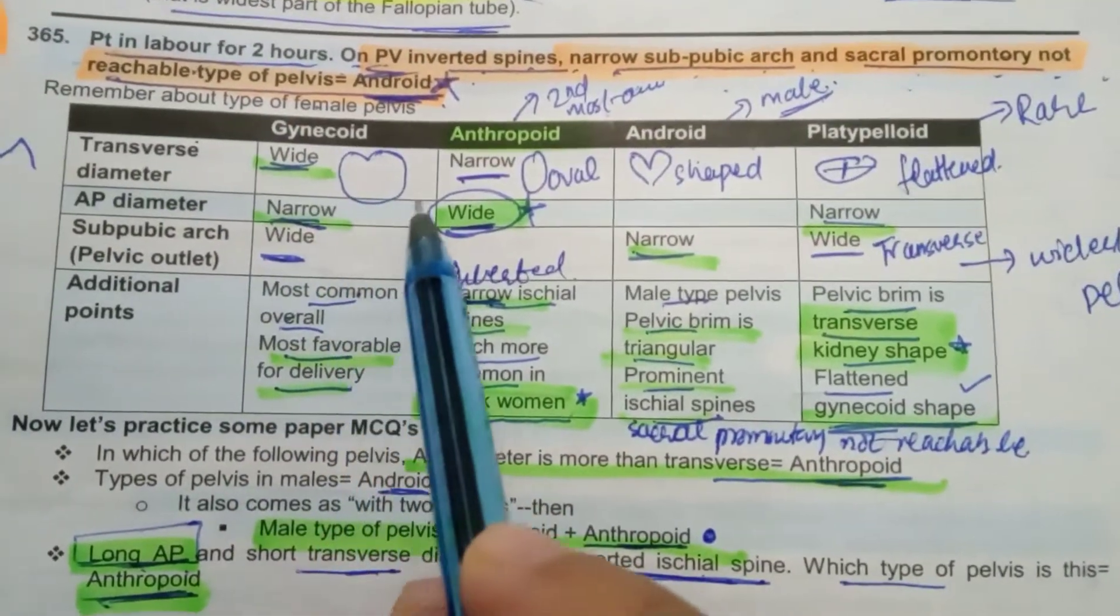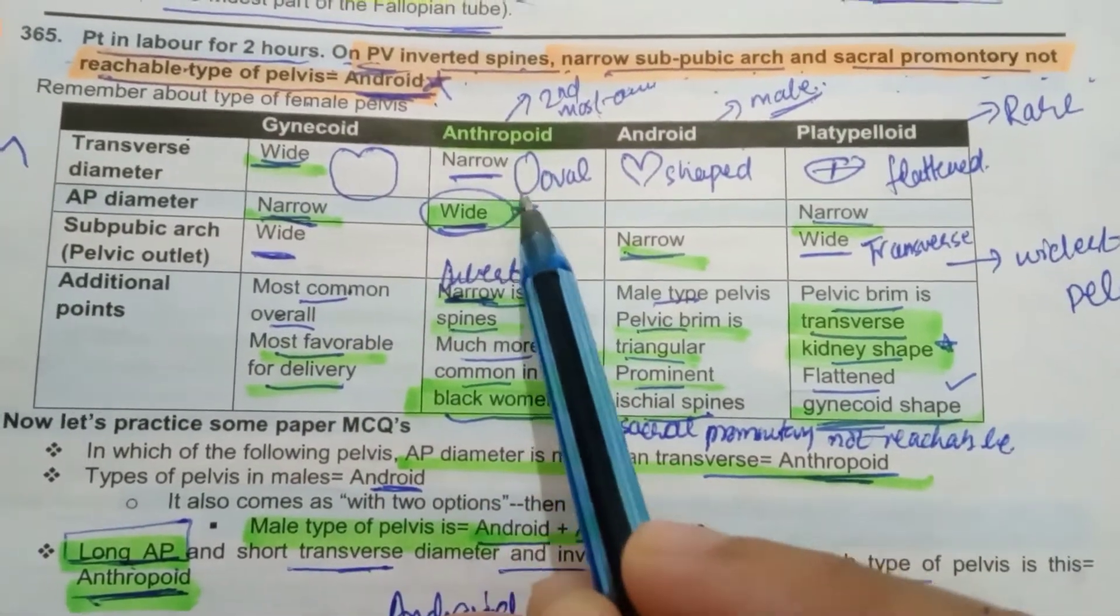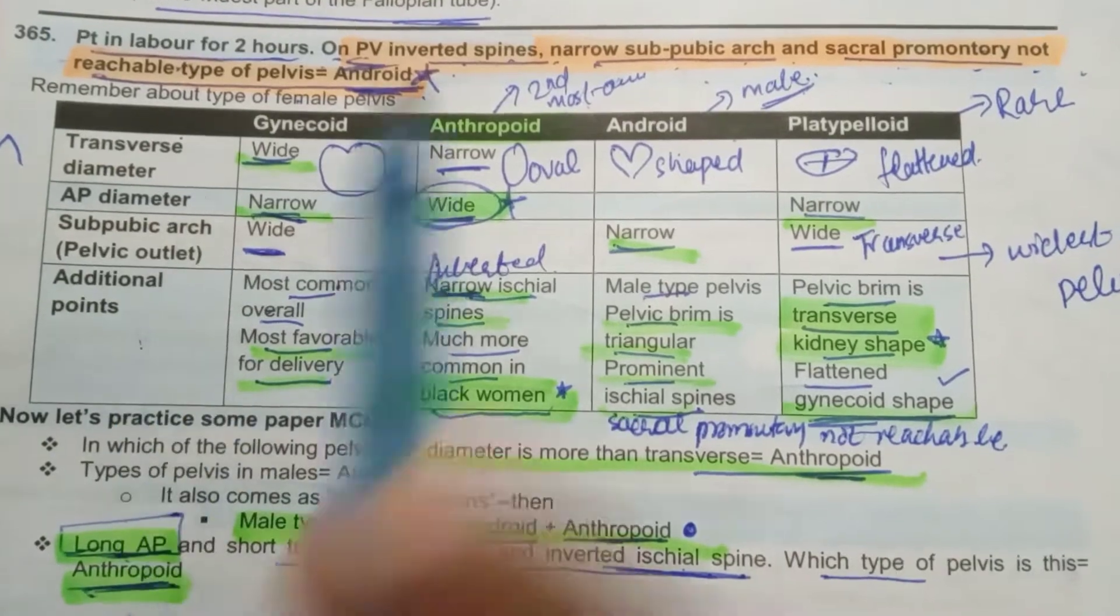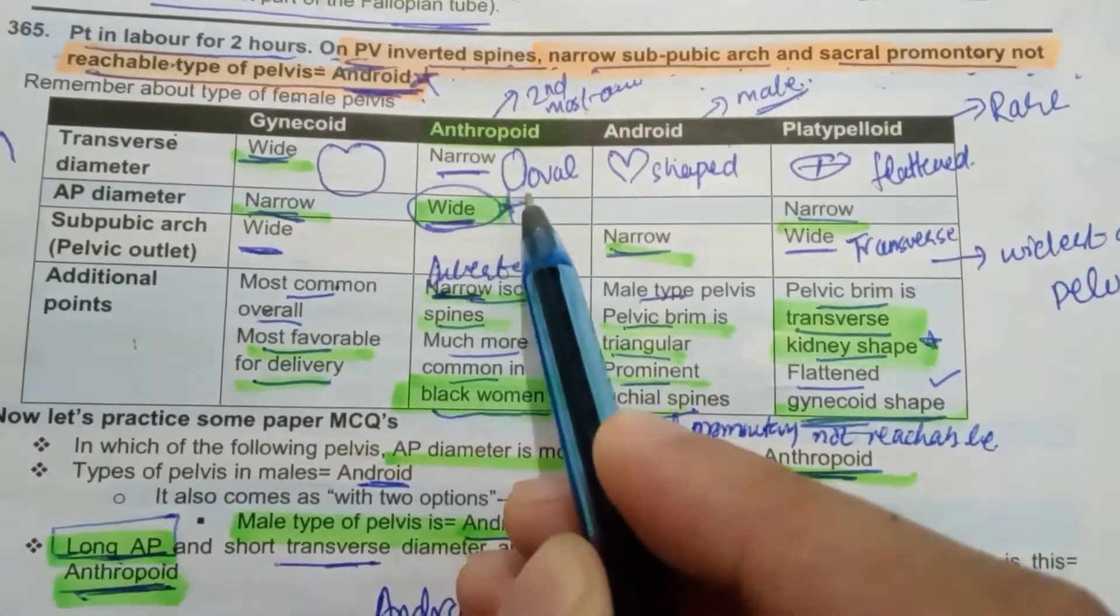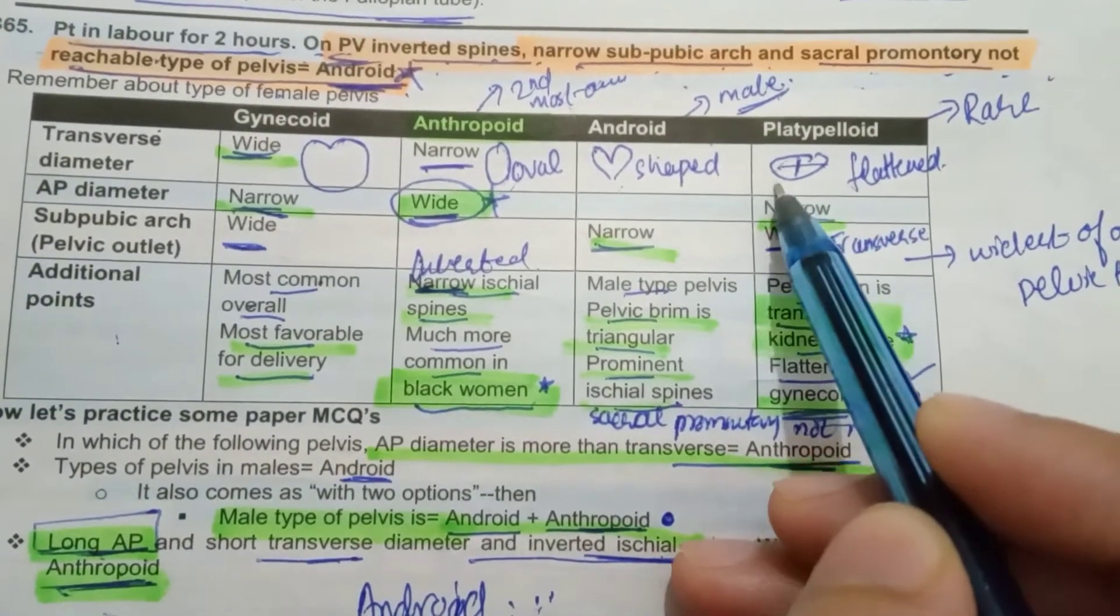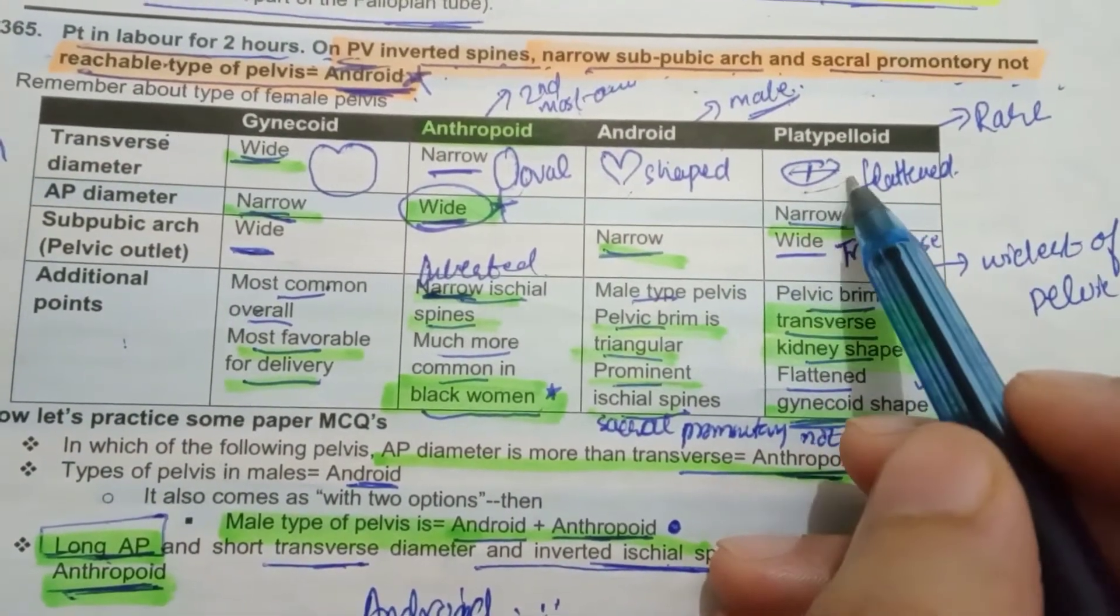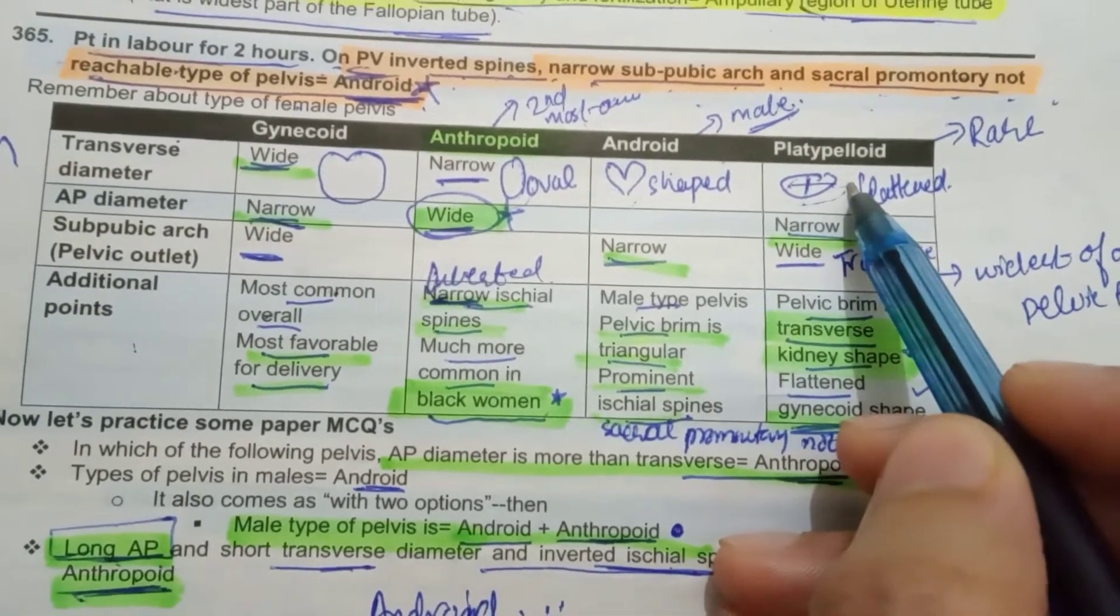These are the figures. This is well rounded gynecoid. Then this is oval, anthropoid. Android is heart shaped. And platypelloid is flattened. It is anterior posteriorly flattened and transverse diameter is wide.